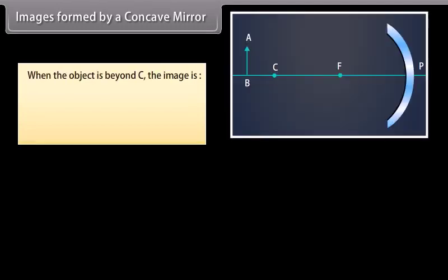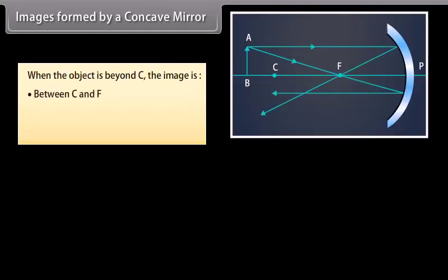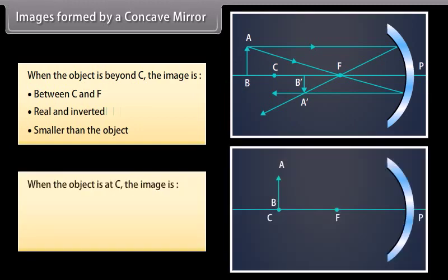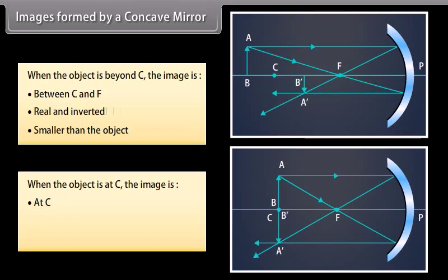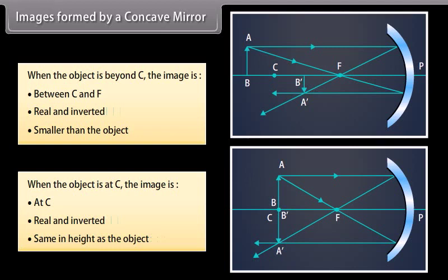Images formed by a concave mirror: When the object is beyond C, the image is between C and F, real and inverted, and smaller than the object. When the object is at C, the image is also at C, real and inverted, and the same size as the object.